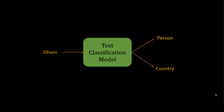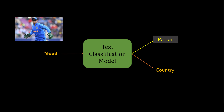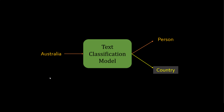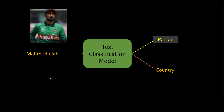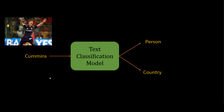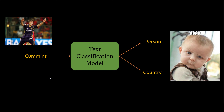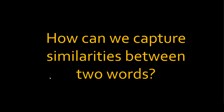Let's assume you are working on a text classification task where the input to the model is a word and you want to classify it as either a person or a country. For example, Dhoni is an Indian cricket team captain, so you would classify him as a person. If the input is Australia, you'd classify it as a country. Mahmudullah, a Bangladesh cricket player, you'd also classify as a person. But what if the input word is Cummins? How does the model interpret and classify that word?